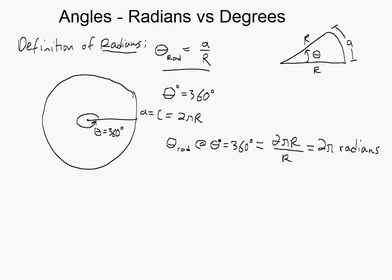So what we find is 360 degrees equals 2π radians. From the definition of radians and knowing that circumference equals 2πR, we get this ratio.